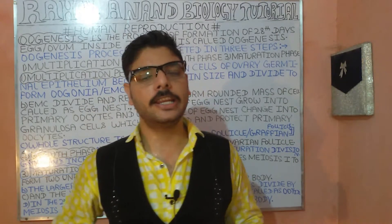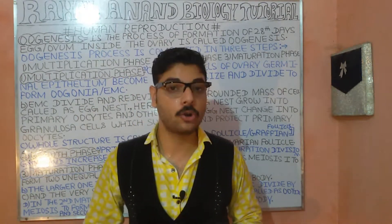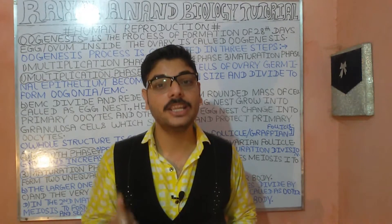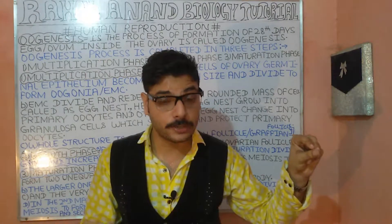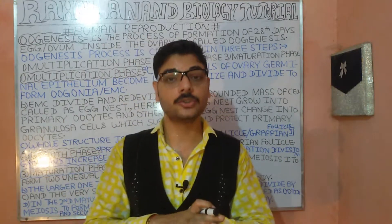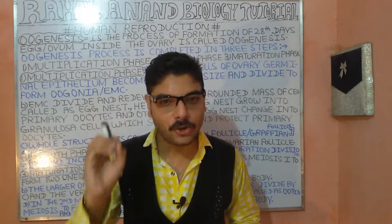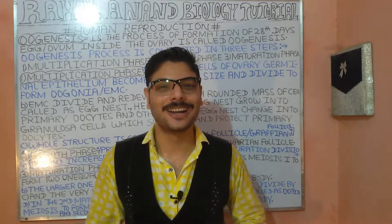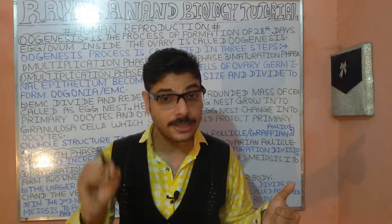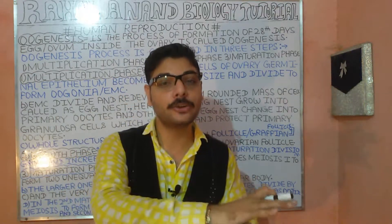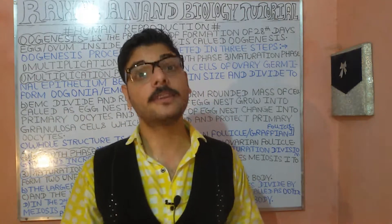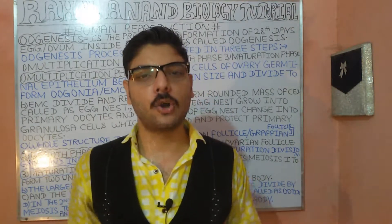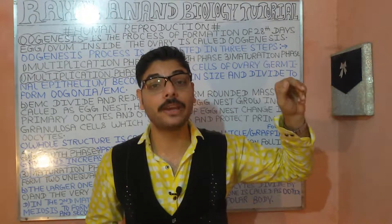The egg nest divides to form two types of cells: the larger ones are the primary oocytes, and the smaller ones are the granulosa cells (also called germinal cells), which surround and protect the primary oocytes. The entire structure is enclosed in the ovarian follicles and Graafian follicles.